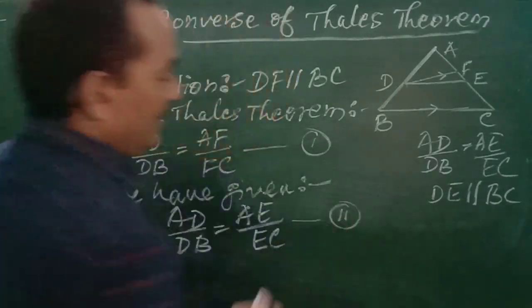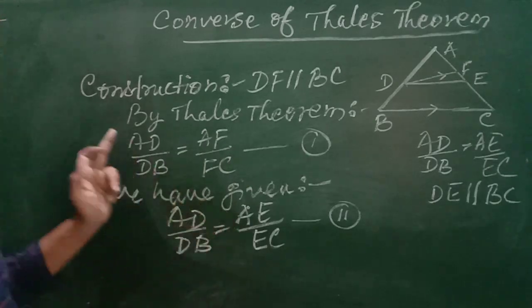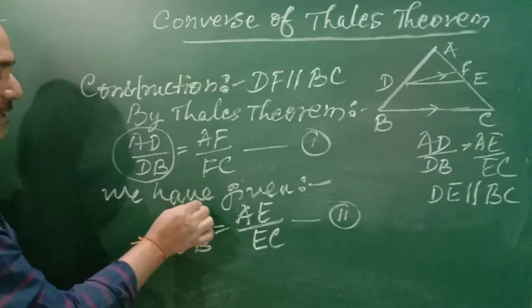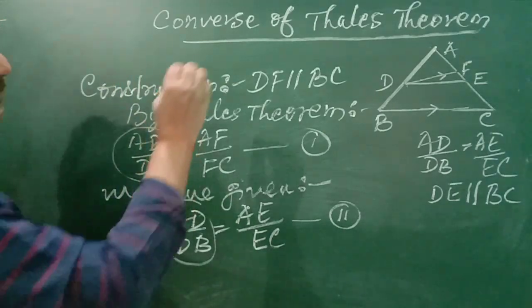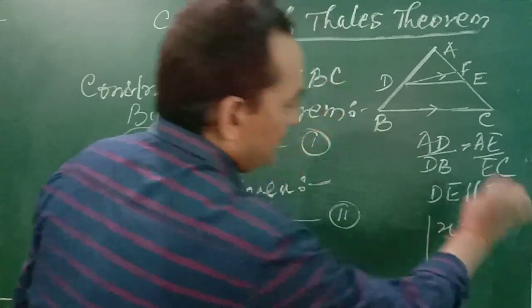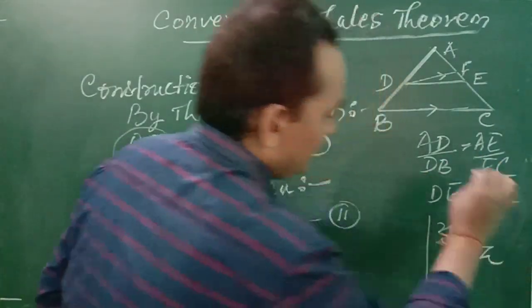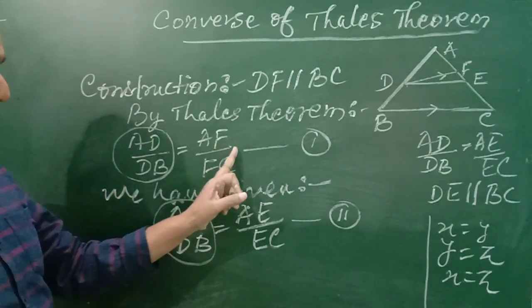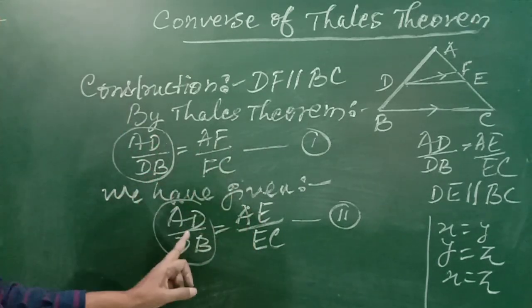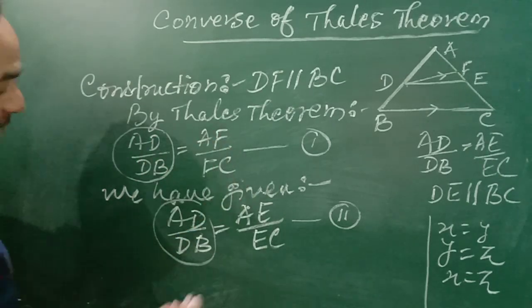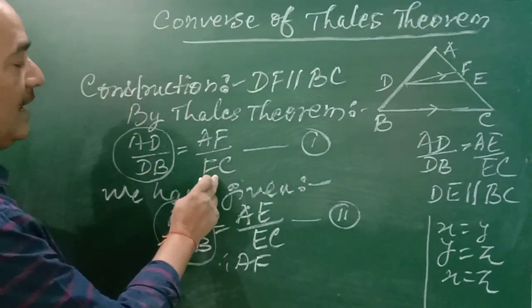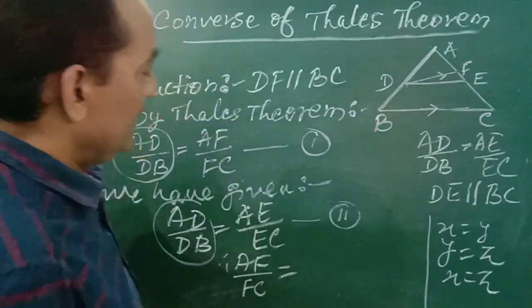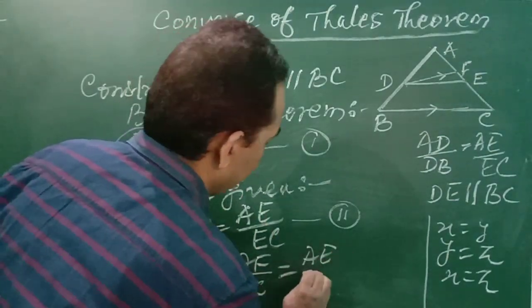As we see, the left-hand side of both equations is the same: AD by DB equals AD by DB. If X equals Y and Y equals Z, we can say X equals Z. So AF by FC is equal to AE by EC.